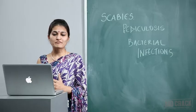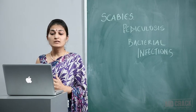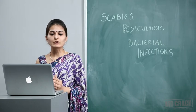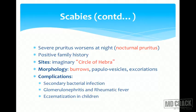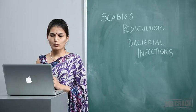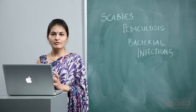The clinical features of scabies: patients generally present with severe pruritus that worsens at night, called nocturnal pruritus — this is very classical for scabies. They will also have a positive family history; other members in the family will have similar complaints. The classical sites include the web spaces of the fingers, the volar aspect of the wrist, the forearms, the cubital fossae, the axillae, the periareolar region, the periumbilical region and the genitals. If we draw an imaginary circle joining all these points, we get what is called the circle of Hebra.